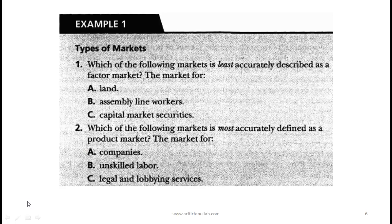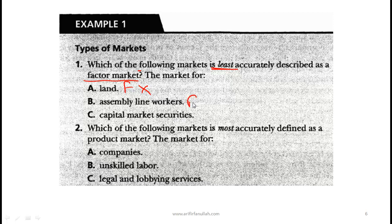The questions on this material are fairly simple — you don't need a PhD in economics. For question one, the key is to underline the word 'least' — the CFA loves phrases like 'least accurately described.' We're looking at factor markets: land is a factor of production, assembly line workers are labor — also a factor. Capital market securities is clearly not a factor market, so that is the correct answer.